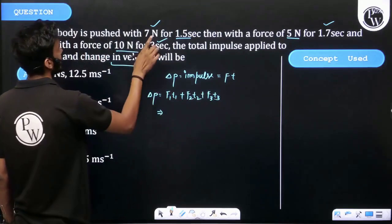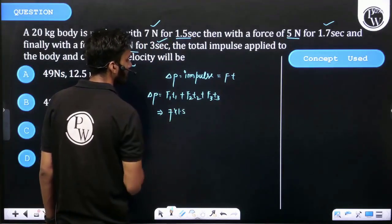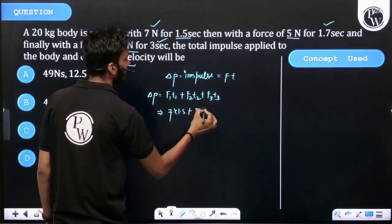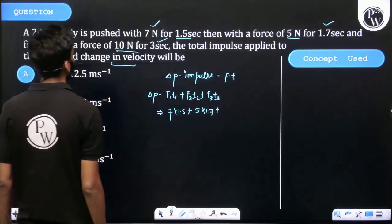Then F1, 7 into 1.5, plus F2, 5 into 1.7, plus F3 is equal to 10 into 3.